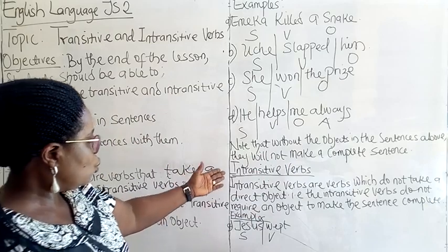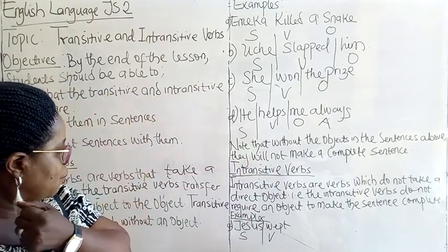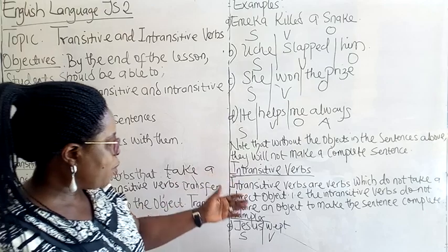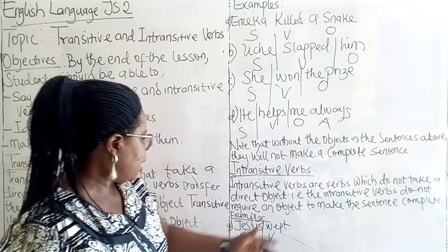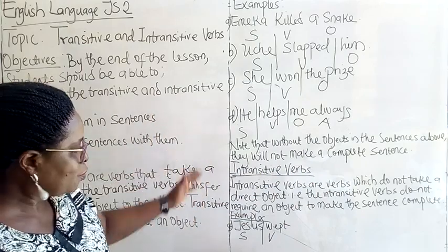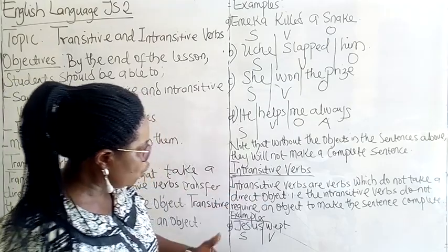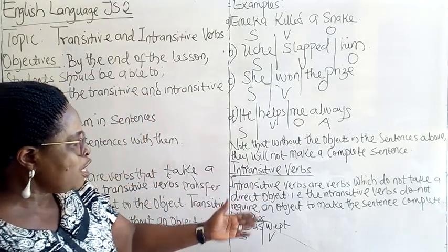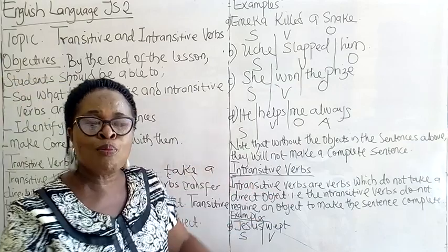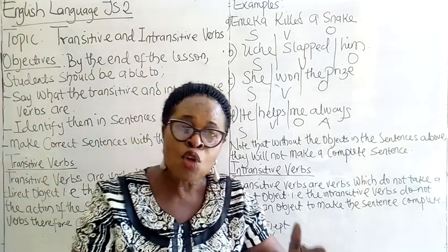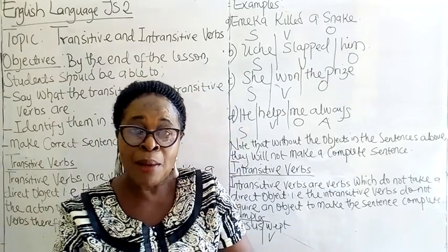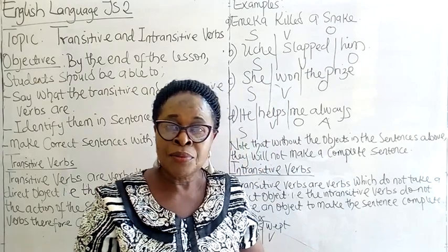Then we go to intransitive verbs. What is an intransitive verb? Intransitive verbs are verbs which do not take a direct object — the opposite of transitive. The intransitive verb does not require an object to make the sentence complete. The sentence stops at the action, and there should be no receiver. There should be a performer, but there should be no receiver.